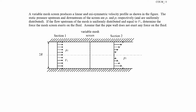In this problem, we're told we have a variable mesh screen located right here that produces a linear and axisymmetric velocity profile downstream of the flow, as shown in this figure. The flow comes in uniformly in this circular channel with radius R and velocity v1, and the pressure here is p1. It then goes through the screen, changing the velocity profile so that it's linear but axisymmetric — meaning you could rotate it around this center line. The pressure there is now p2 at section 2. We're asked to find the force the mesh screen exerts on the fluid.